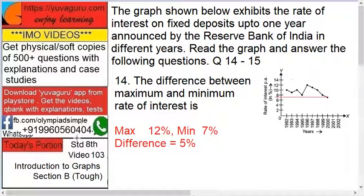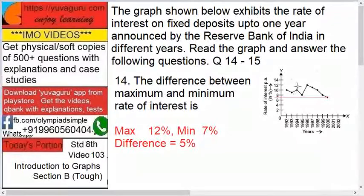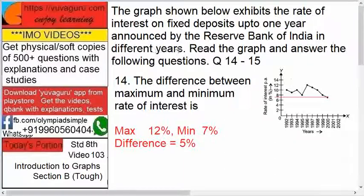Hi friends, welcome to IMO videos standard 8, video number 103 — introduction to graphs, section B tough. The graph shown below exhibits the rate of interest on FDs (fixed deposits) up to one year, announced by the Reserve Bank of India in different years. Read the graph and answer the following questions 14 to 15.